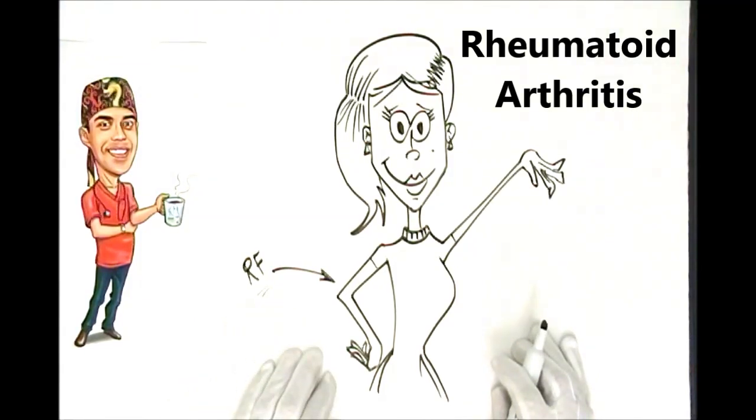Not surprisingly, the lab work came back this week showing that the uric acid level was normal, so basically ruling out gout, and the rheumatoid factor was off the charts. It was a huge amount, huge titer.